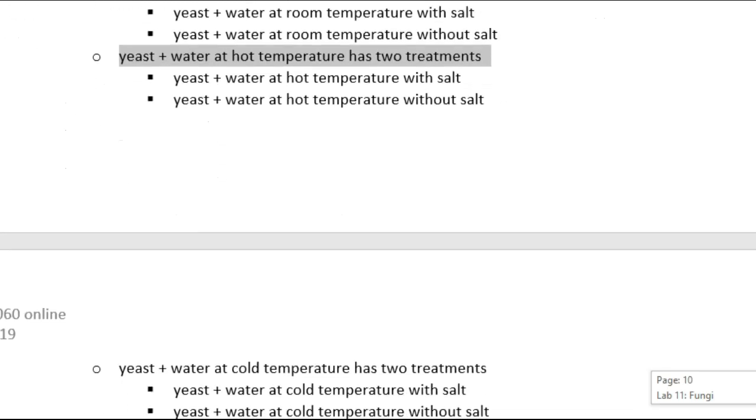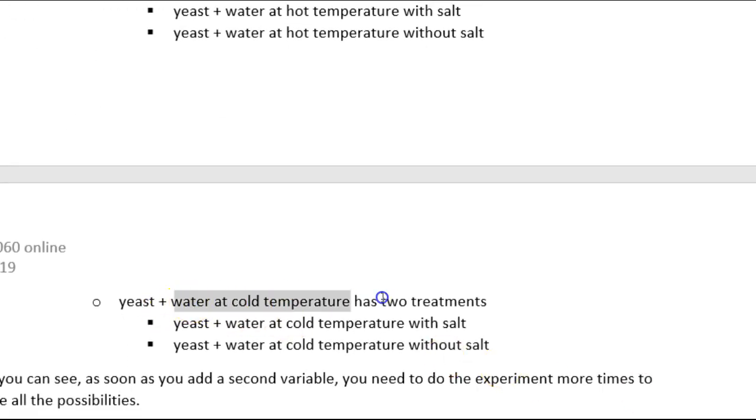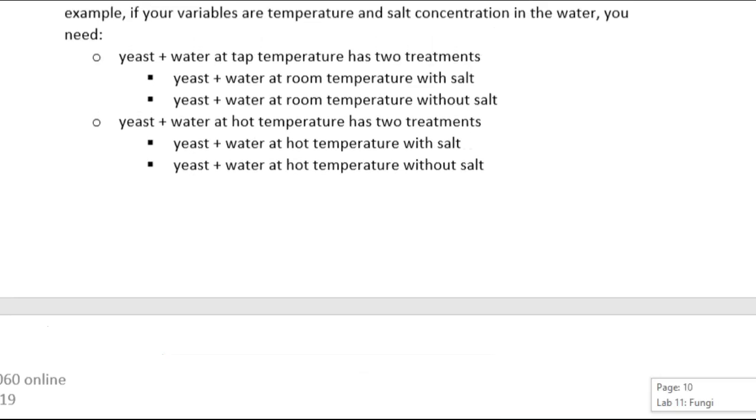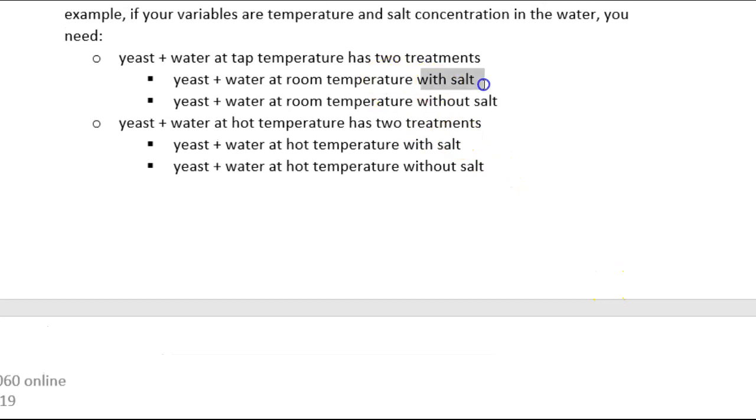Looking back at our document here, for example, if you have yeast at tap temperature, yeast at hot temperature, and yeast at cold temperature, and then you also want to look at salt, then you have to cross the three temperatures with salt and without salt in addition to having a control. If you want to look at salt and temperature and have a control, you're going to need to run the experiment in sequence no less than seven times.